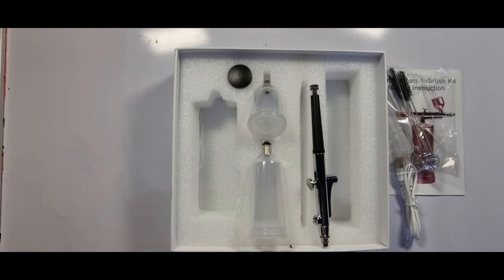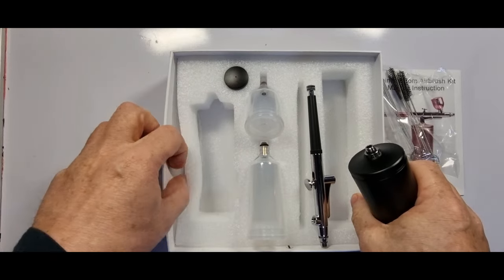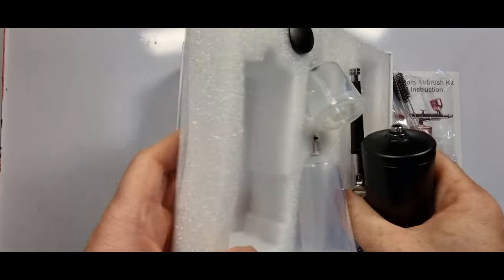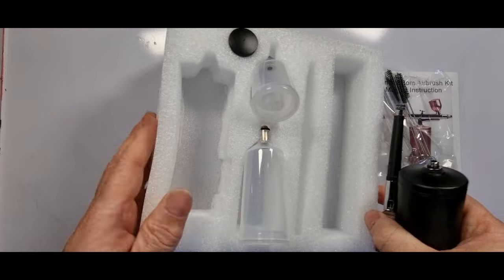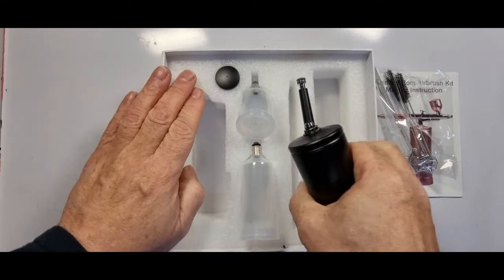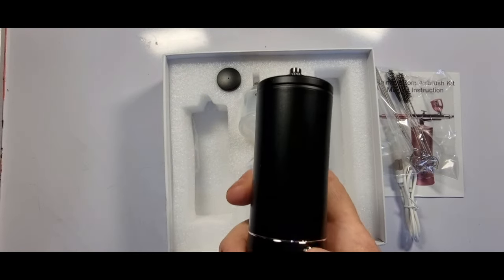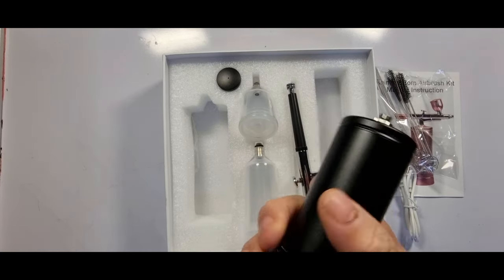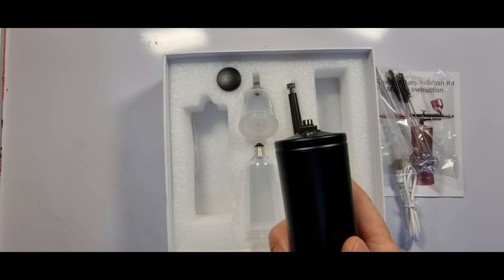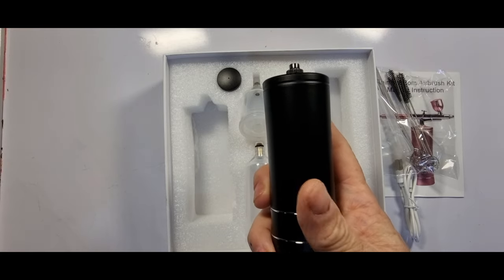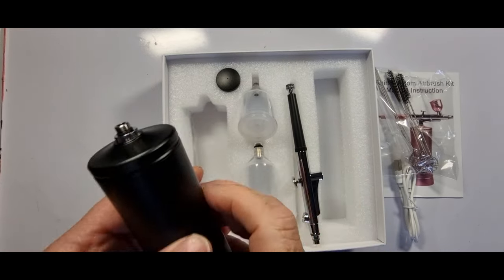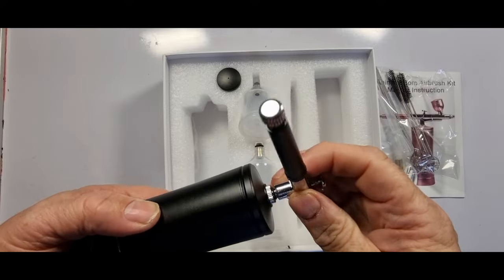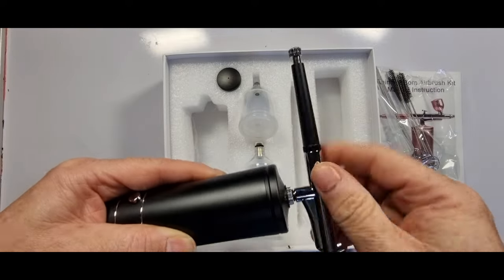And then we've also got the compressor itself. Now it was meant to come with a hose, but for some reason, there's no hose in this, unless I chose the wrong one. I think I may have chosen the wrong one. I think the pink one was the one that came with the hose. Okay. So we've got a mini compressor. Two speeds, obviously it needs charging, but it's got some charge in it.